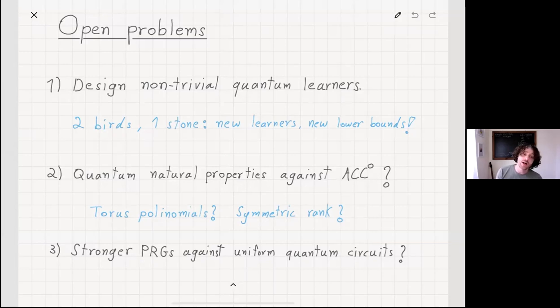The second one is, can we show quantum natural properties against ACC0? In fact, if we have that, this by our methodology would lead to showing that BQE is not contained in ACC0, that would be extremely interesting. Some directions, which I'd be happy to discuss, via Taus polynomials. It's enough to consider functions that can be approximated by Taus polynomials or functions that meet Boolean matrices of a certain symmetric range. There are some concrete directions that one can attack it.